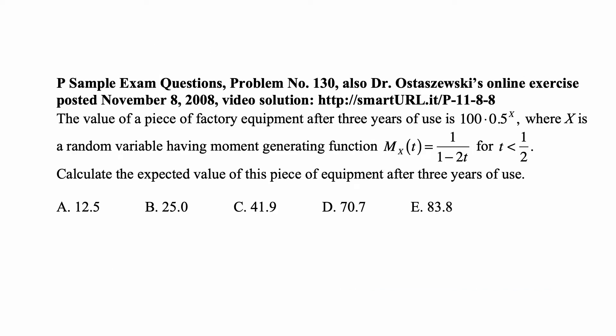Here's a problem for today for exam P on probability. The value of a piece of factory equipment after three years of use is 100·(0.5)^x, where x is a random variable having moment generating function M_x(t) = 1/(1-2t) for t < 1/2. Calculate the expected value of this piece of equipment after three years of use.